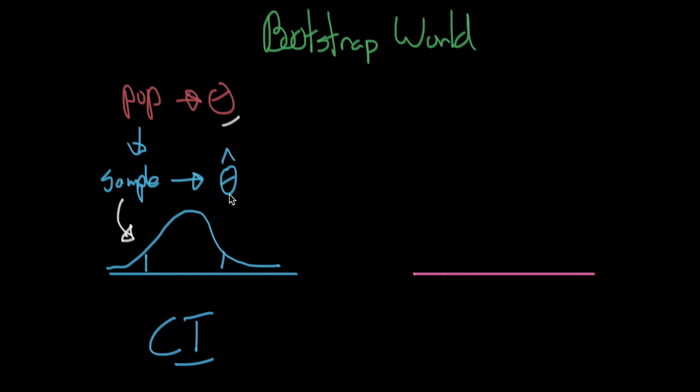Well, we can do the exact same thing by using the plugin principle to estimate the sampling distribution. So what do I mean? So once again, instead of using the population, we're going to be applying the sampling distribution function on the sample itself. This I think is so cool.